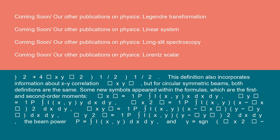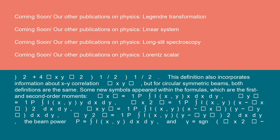Some new symbols appeared within the formulas, which are the first and second order moments. ⟨x⟩ = (1/P)∫I(x,y)x dxdy, ⟨y⟩ = (1/P)∫I(x,y)y dxdy, ⟨x²⟩ = (1/P)∫I(x,y)(x-⟨x⟩)² dxdy, ⟨xy⟩ = (1/P)∫I(x,y)(x-⟨x⟩)(y-⟨y⟩) dxdy, ⟨y²⟩ = (1/P)∫I(x,y)(y-⟨y⟩)² dxdy. The beam power P = ∫I(x,y)dxdy.